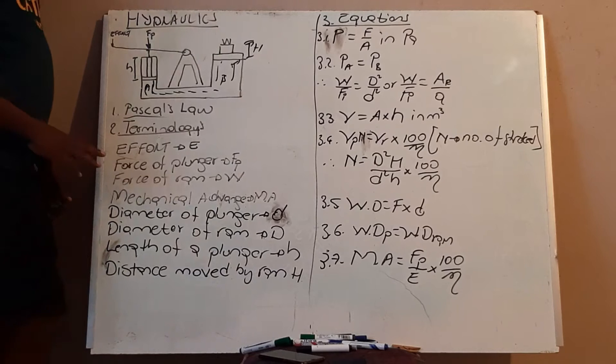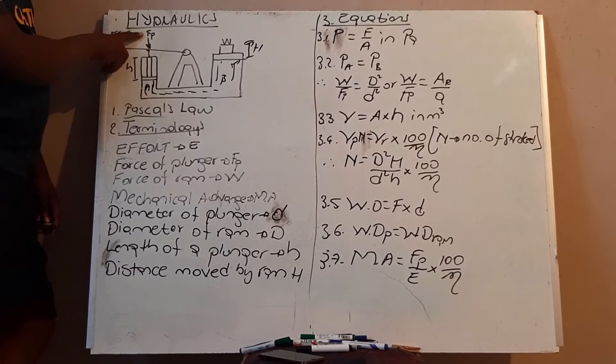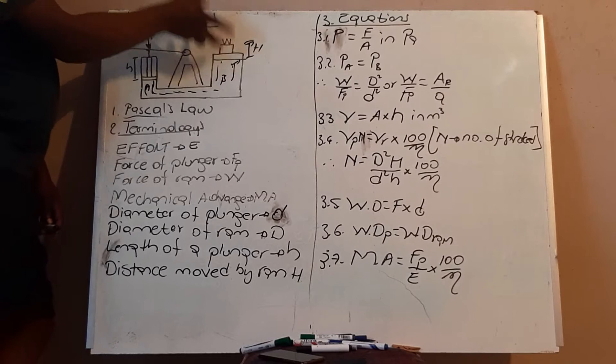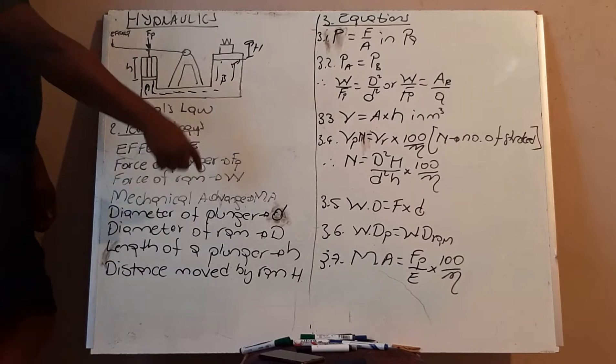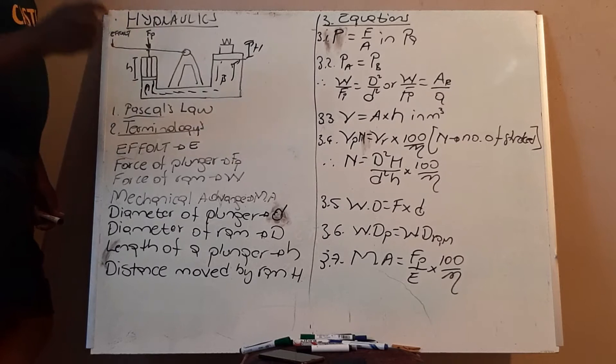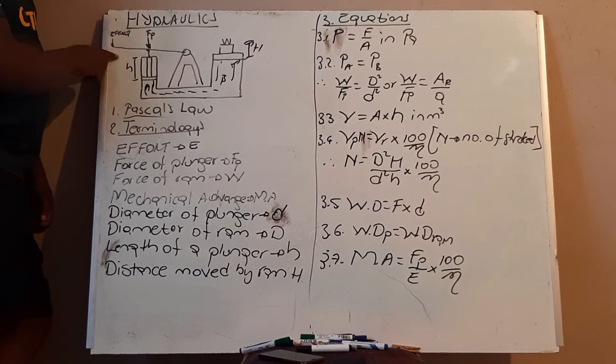Now these are the variables I will use. Your effort is E. There is the force of the plunger, which is Fp. Force of the ram will be W since it's a load — it's the weight of the ram. You can have mechanical advantage, and two diameters: one of the plunger (small d) and one of the ram (big D). The distance moved by the plunger is small h, and the distance moved by the ram is big H.